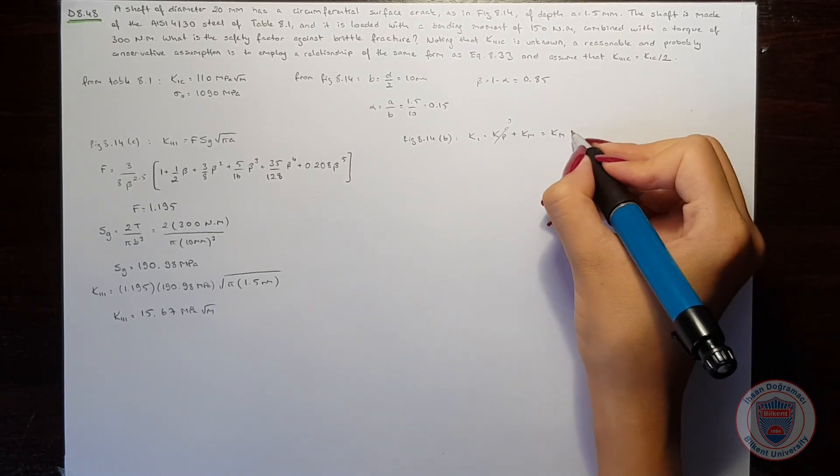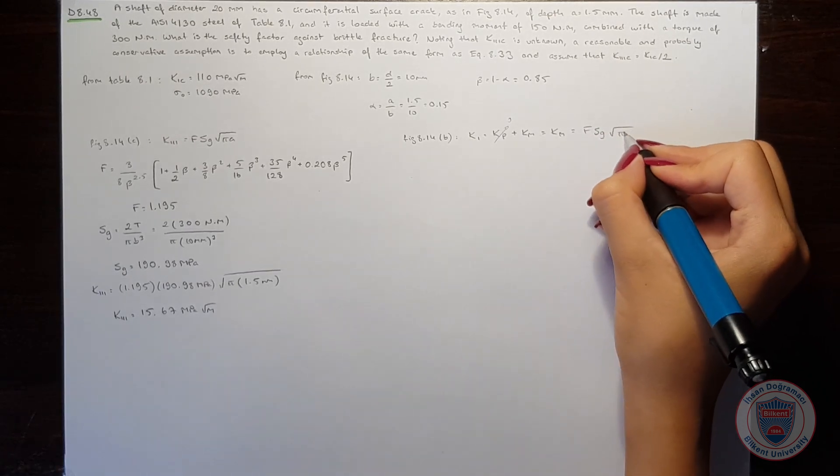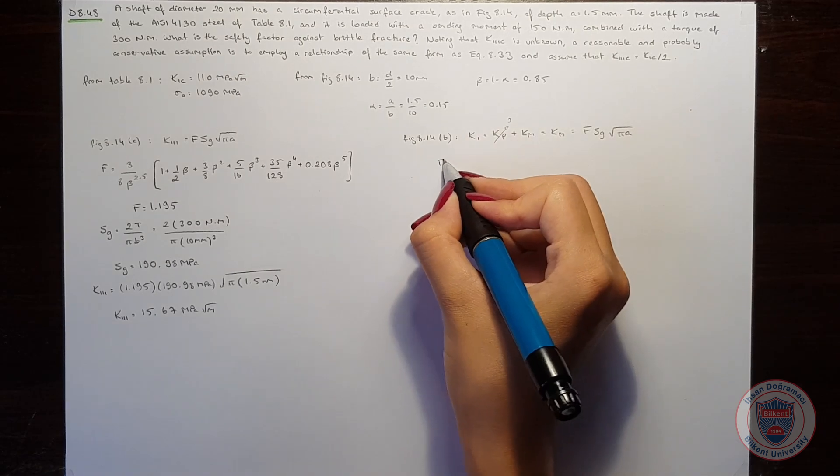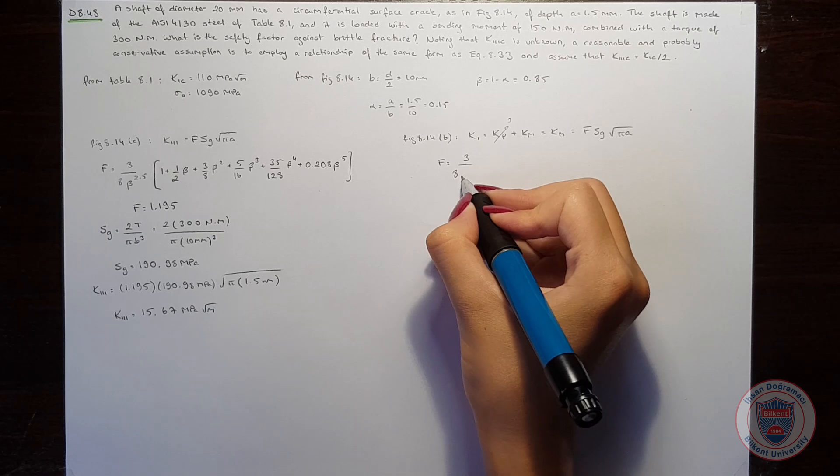Km equals the form factor times Sg times square root of pi times A. We have the equation for the form factor.